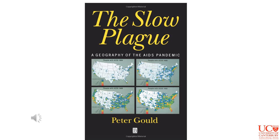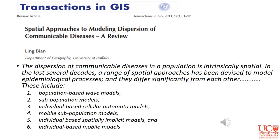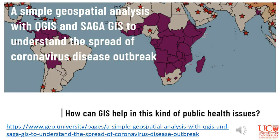The study of disease distribution and dispersion by geographers is not new. One of the earliest and most well-known pieces of work is a book called The Slow Plague: A Geography of the AIDS Epidemic by Peter Gould, an eminent geographer born in Britain who spent much of his time at Penn State University. He examined the spread of AIDS through a geographical lens — a pioneering piece of work. Now geographers look at dispersion of diseases in multiple ways, using multiple methodologies including population-based wave models and subpopulation models.